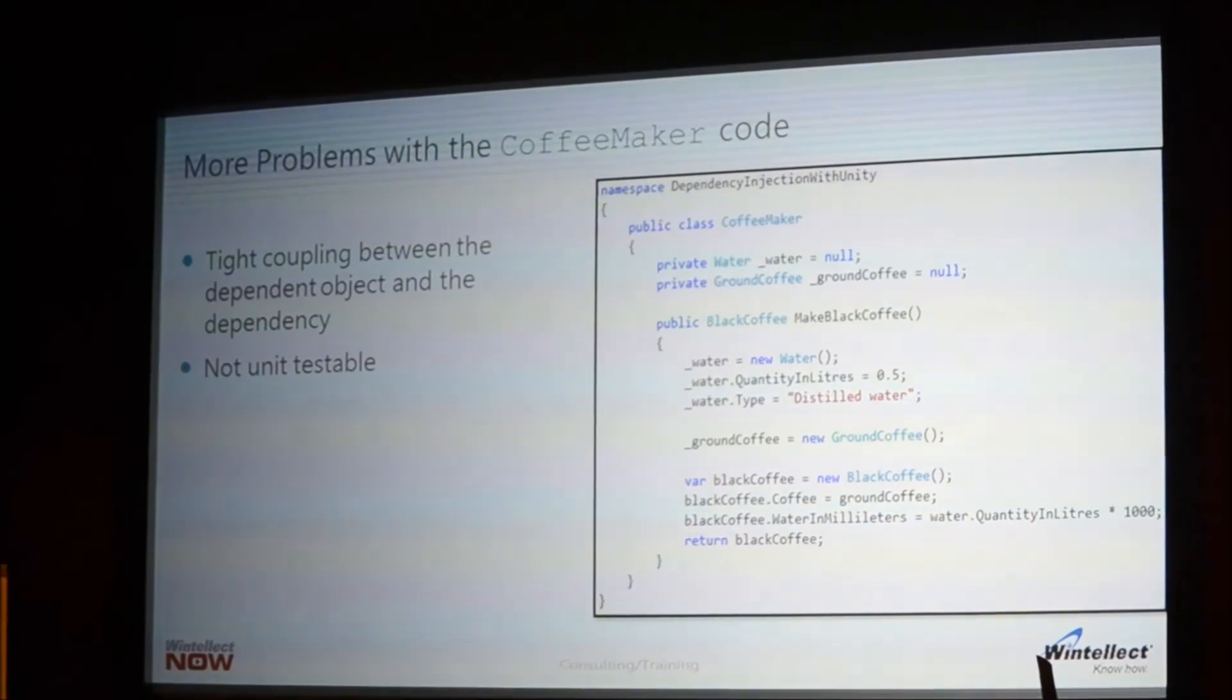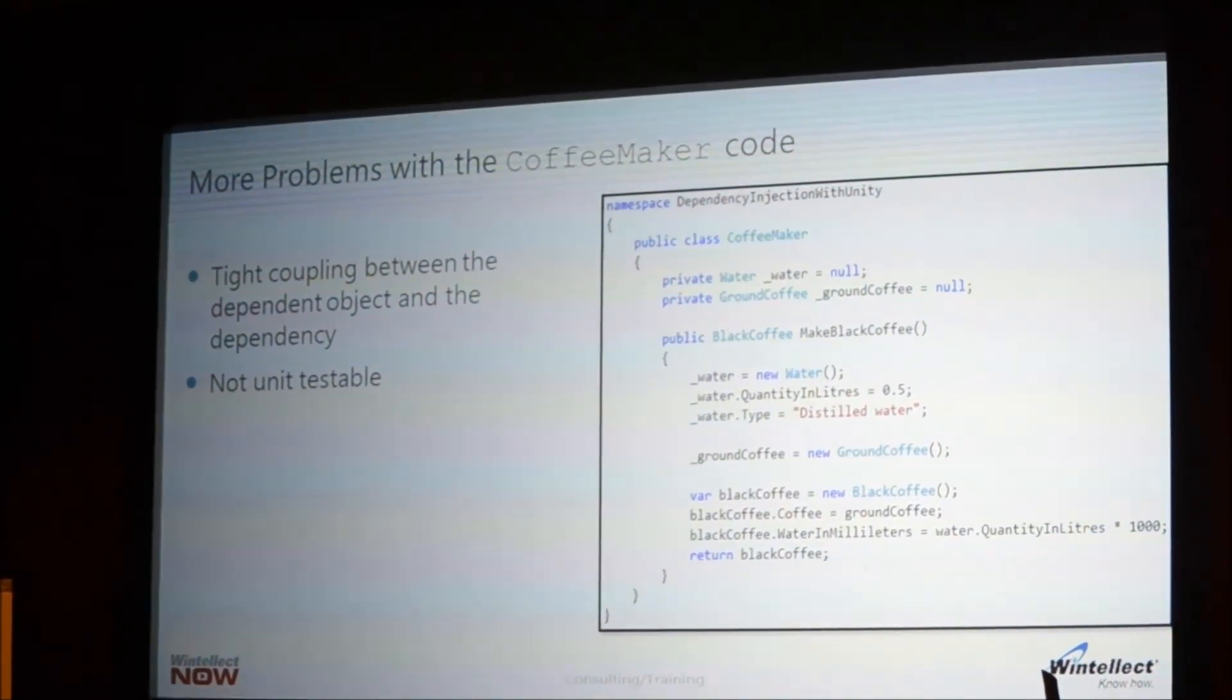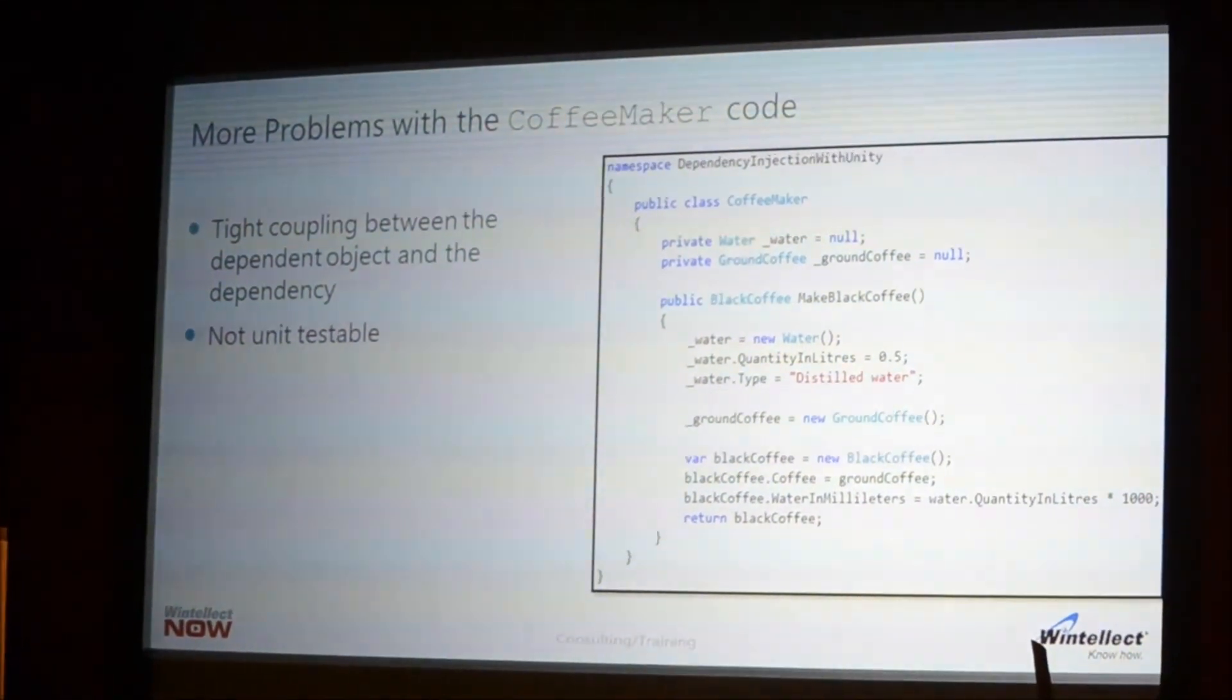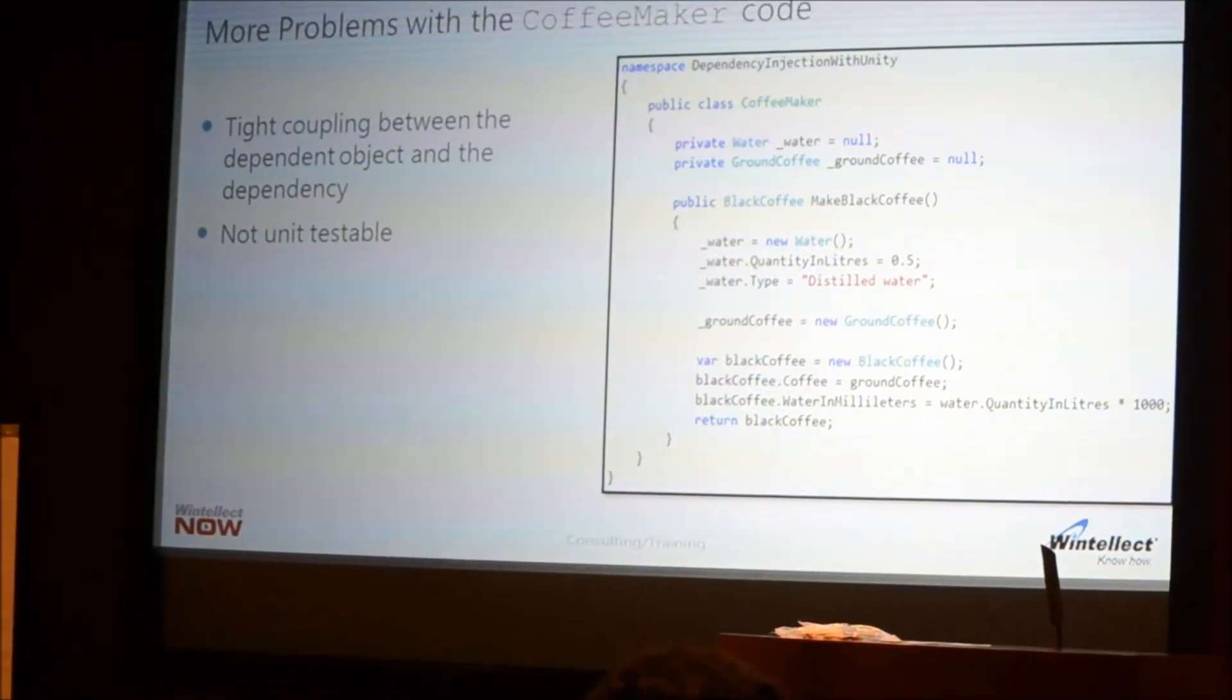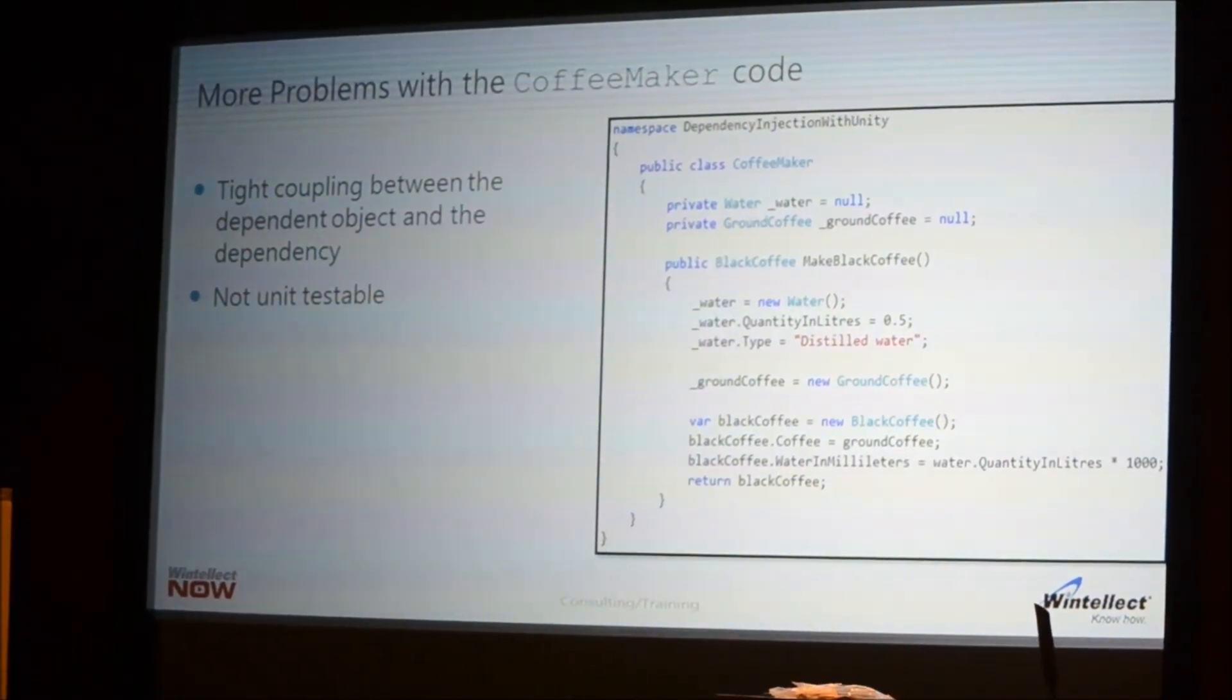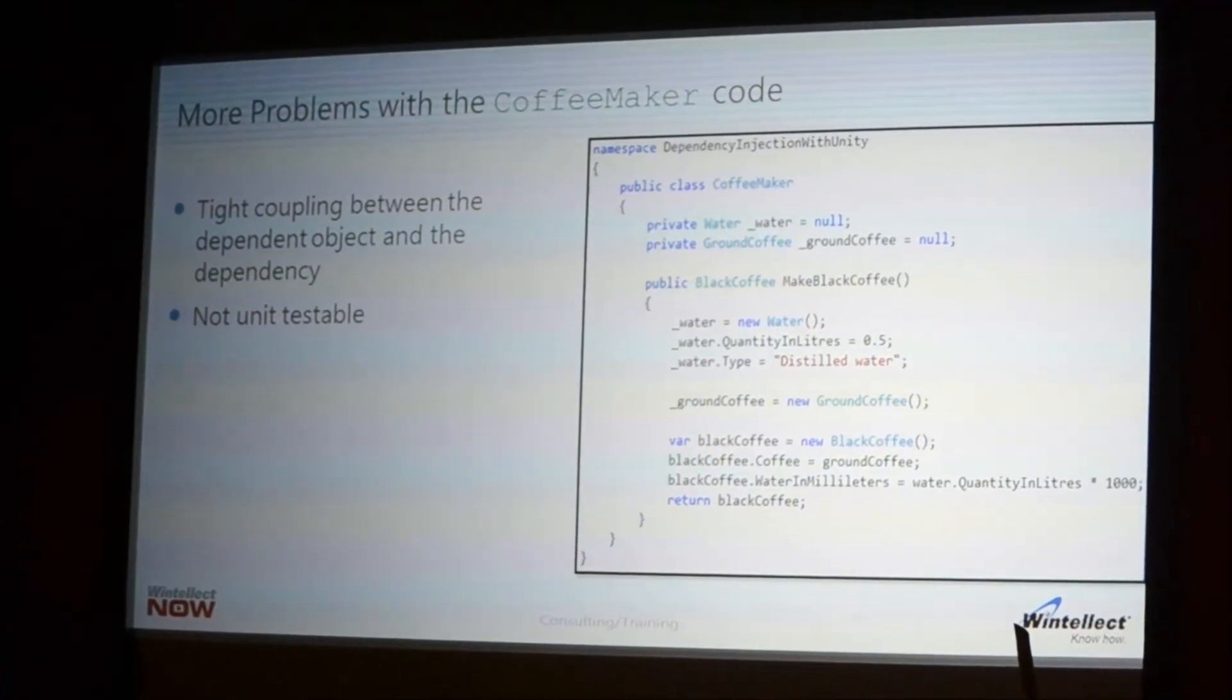This code is just not unit testable. I couldn't test just the heating element to see if I put in just water and not the coffee, is it going to heat the water? I cannot test a particular unit of this coffee maker because I'm not the one providing the water and the coffee from the outside. This coffee maker is manufacturing water and coffee.